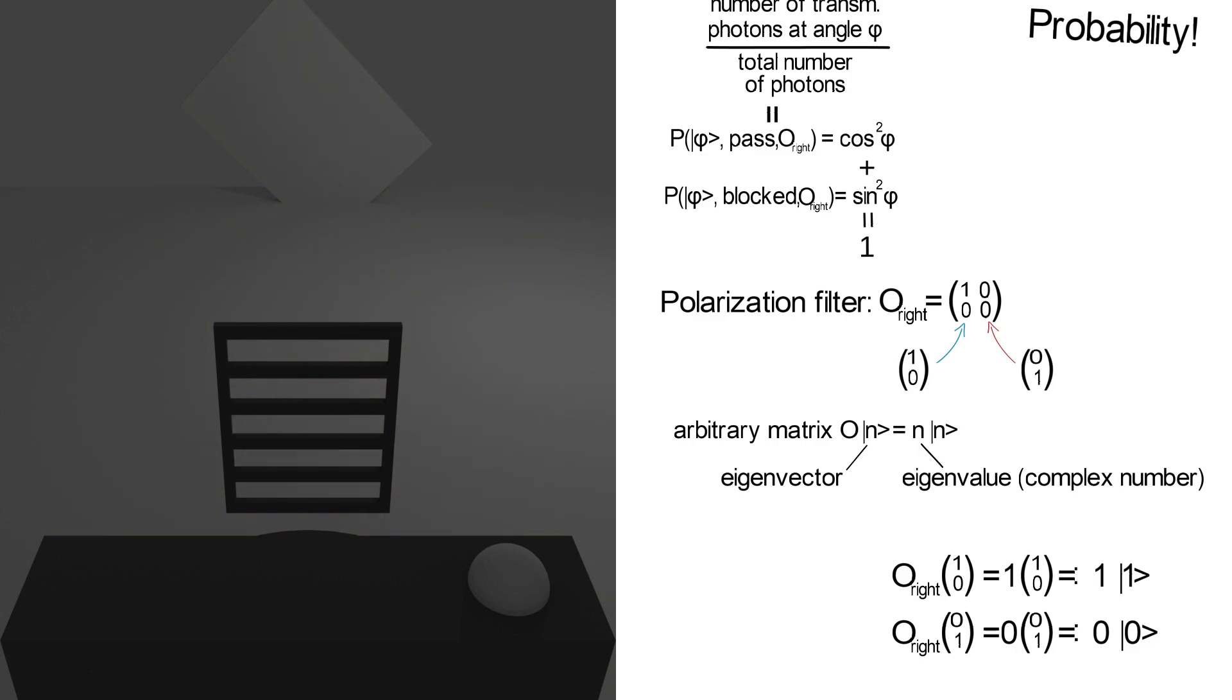Going back to our experiment, there's an interesting observation. All our detector measures is if the arriving photon passes the filter or not. If we name these two options 1 and 0, we see that they exactly match the eigenvalues of the matrix O right. At this point this might seem like a mere coincidence, but if we look at other experiments we will find exactly the same result.